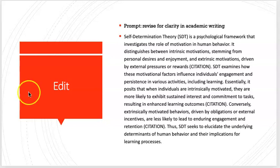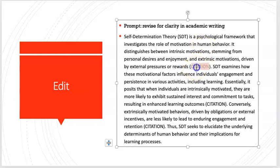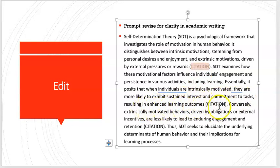So now I need to go back in and add my citations. Where did I find this information about intrinsic and extrinsic motivators? You need to go find the article where you found that information. And then this sentence here — 'resulting in enhanced learning outcomes' — that was in an article that I read, so I need to cite that source.